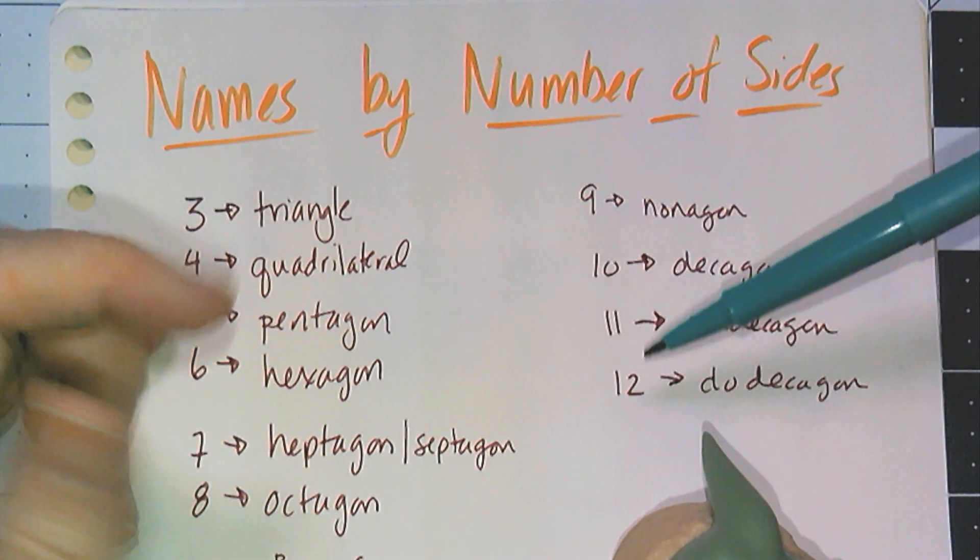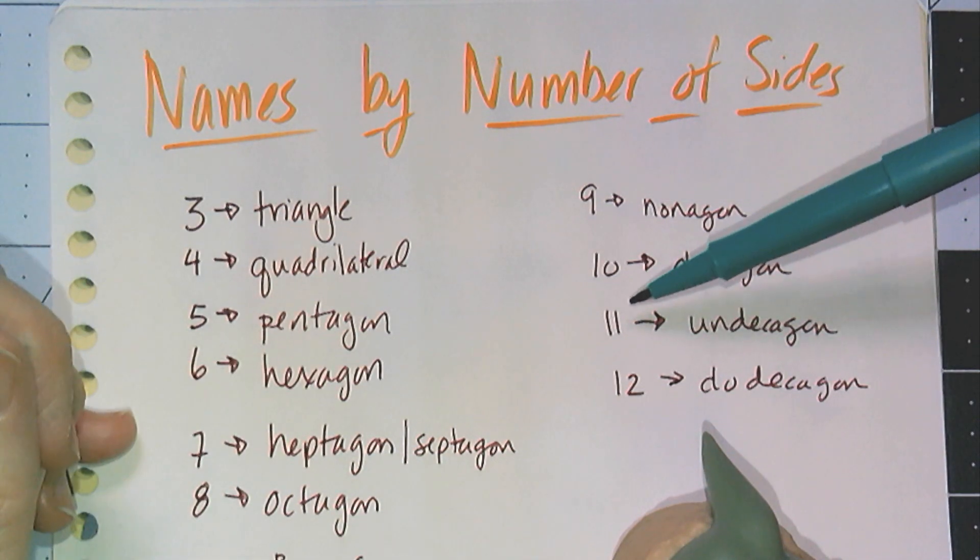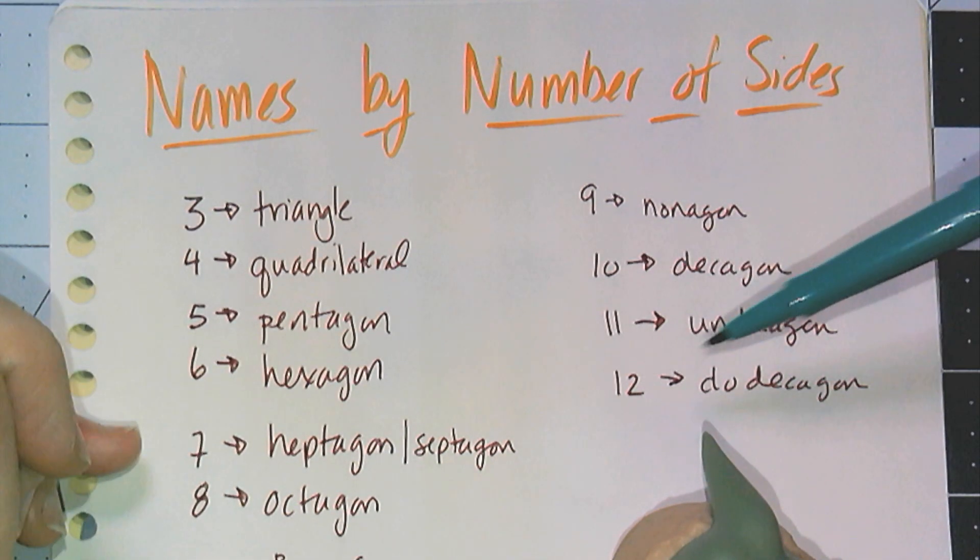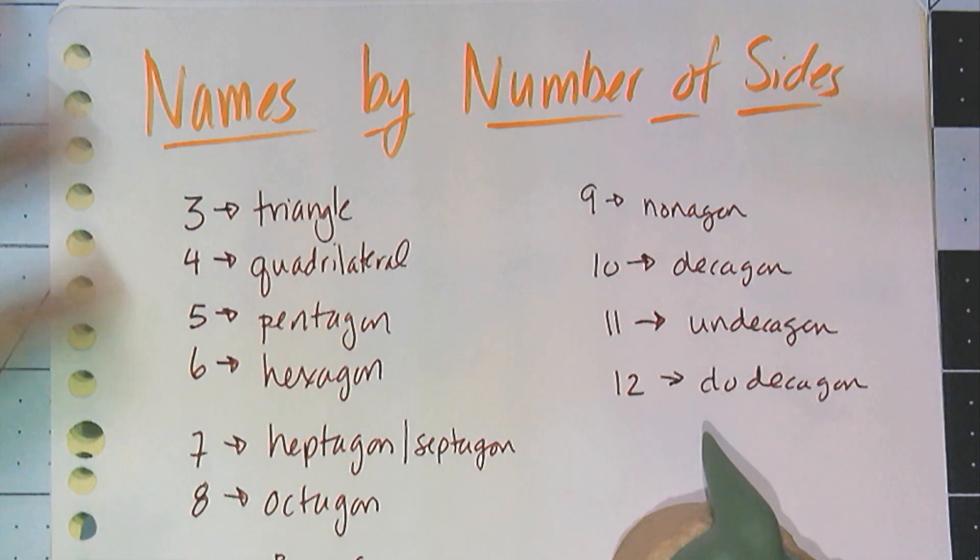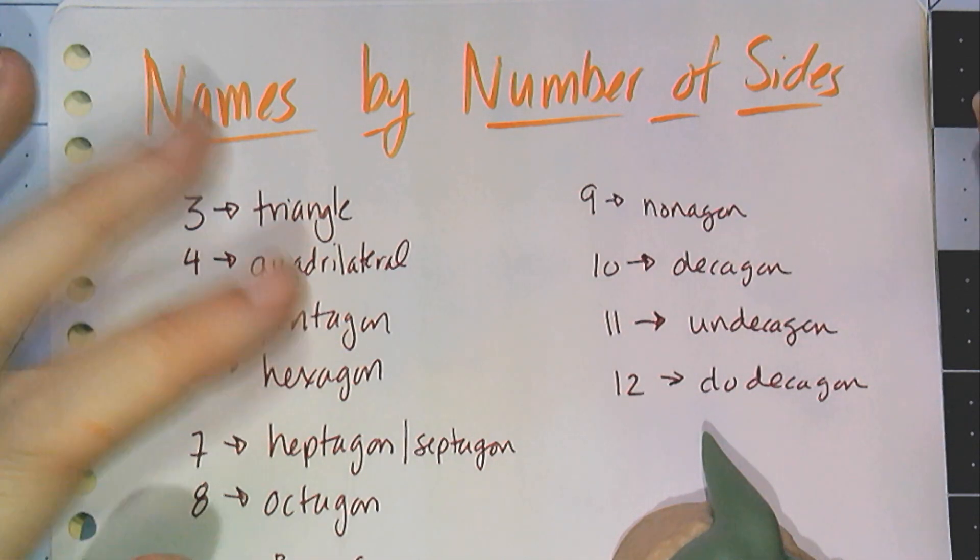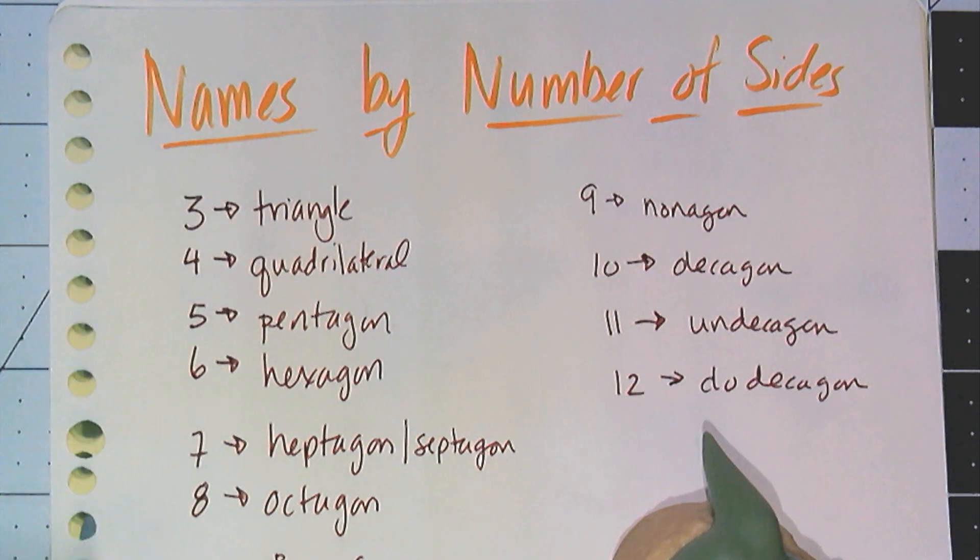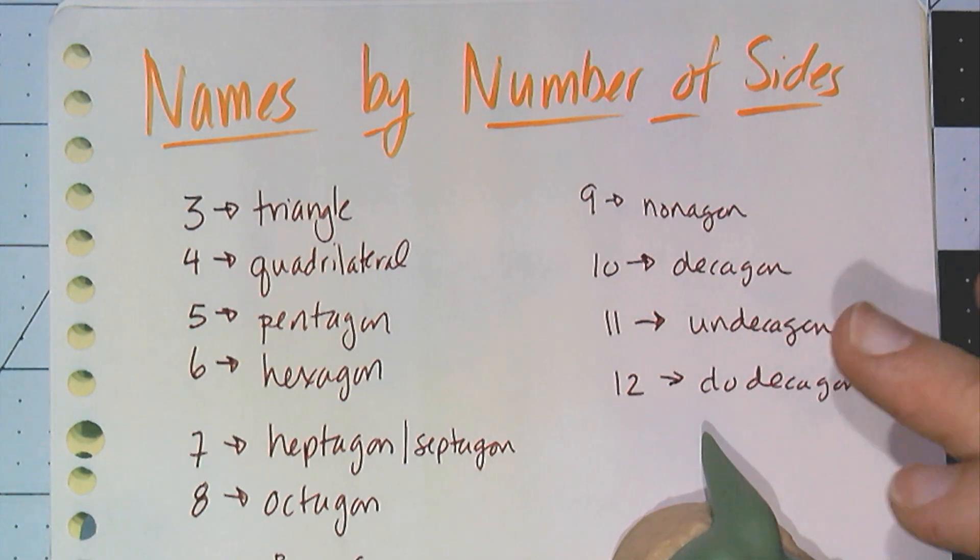Eleven and twelve are probably new to most people. Eleven is undecagon, and twelve is dodecagon. Past that, we usually don't remember the names. We just call it like a thirteen-gon or an n-gon because that's just too many names to memorize. So we're going to stop at twelve.